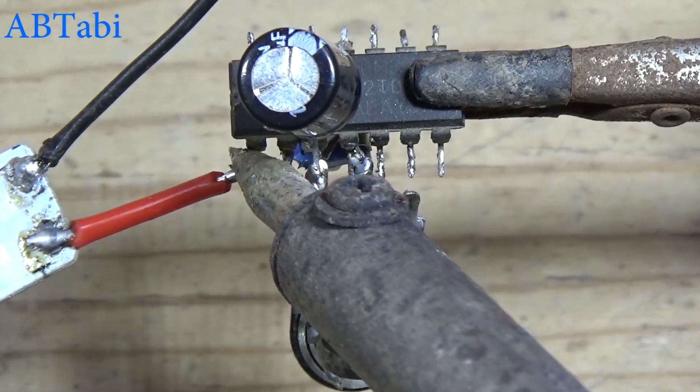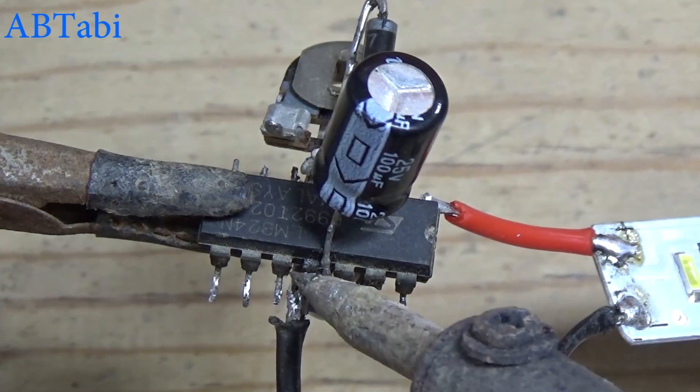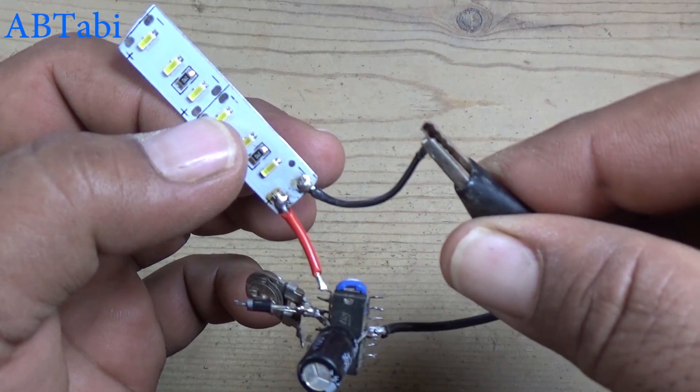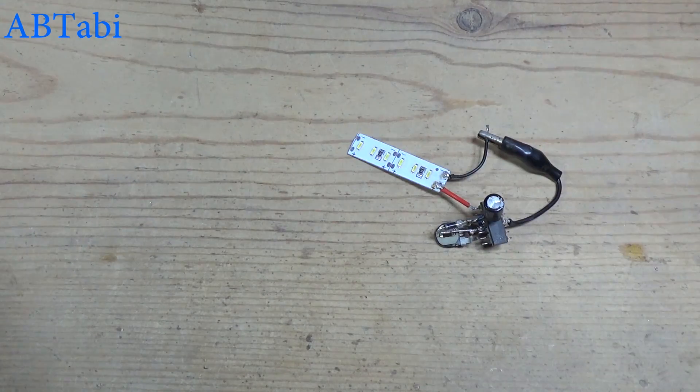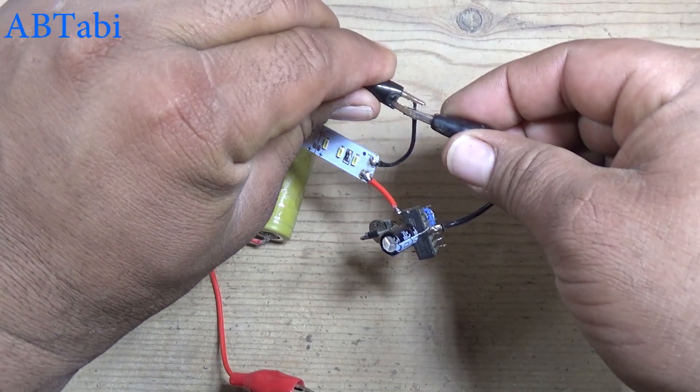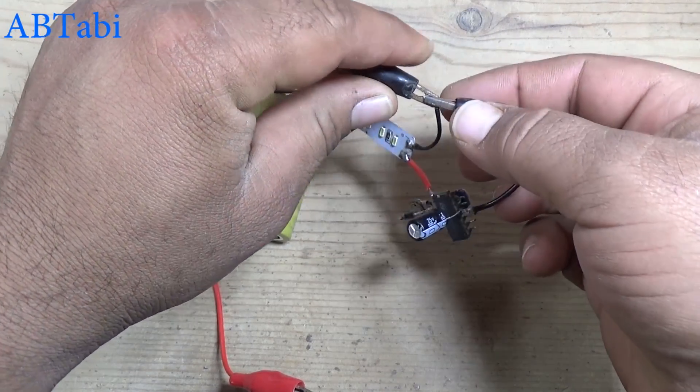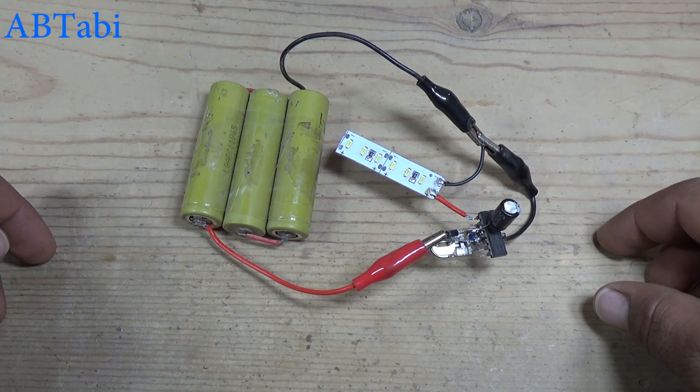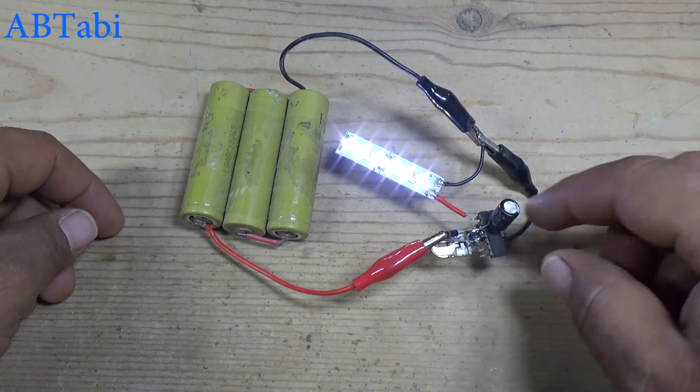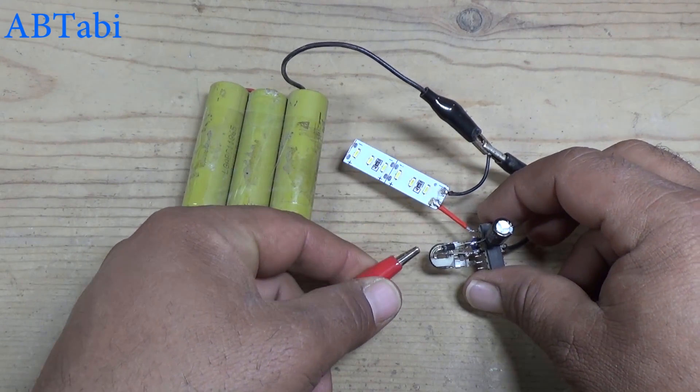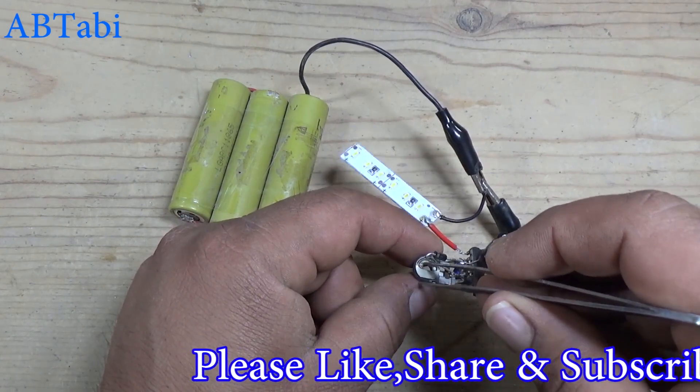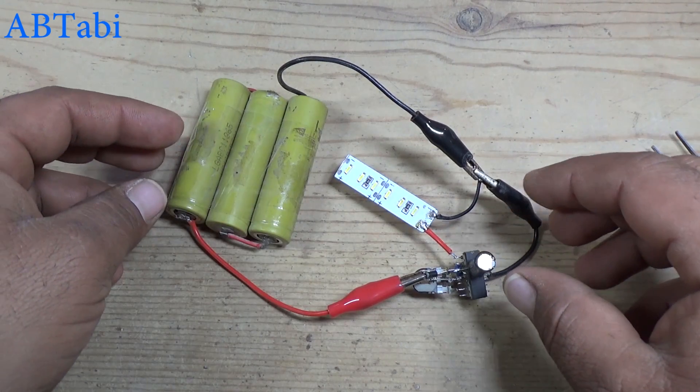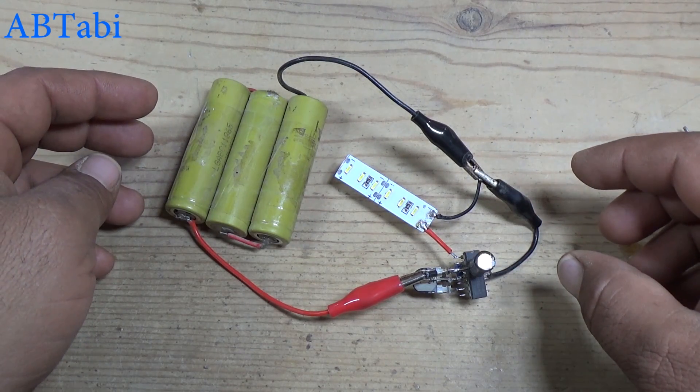We get output from IC pin 1. Here you can use relay to control any device. Connect with 12 volt battery. You can adjust delay time by varying the 1 million ohms variable resistor. If you want more long delay time, you use here 2 million, 4 million, 10 million, or 20 million ohms variable resistor.